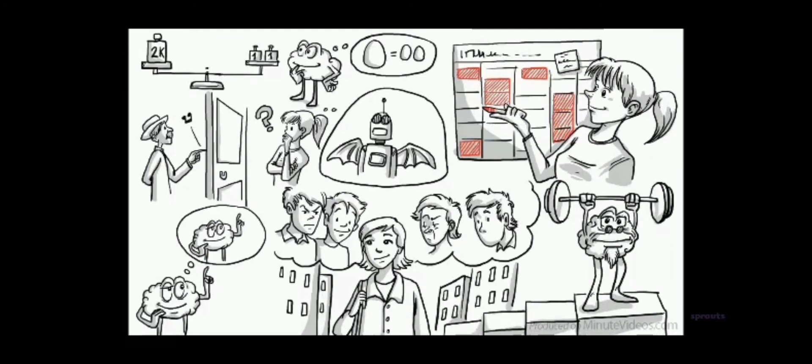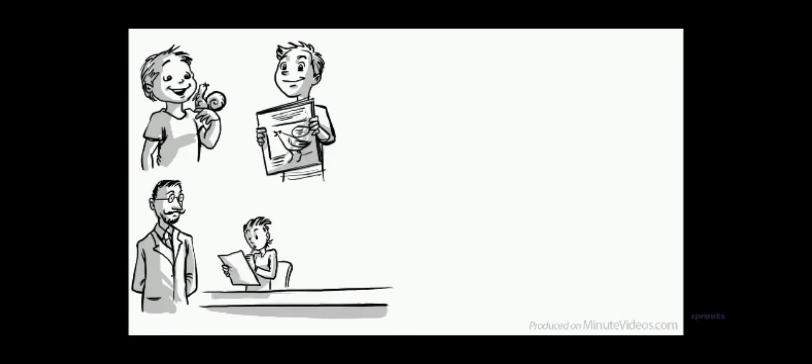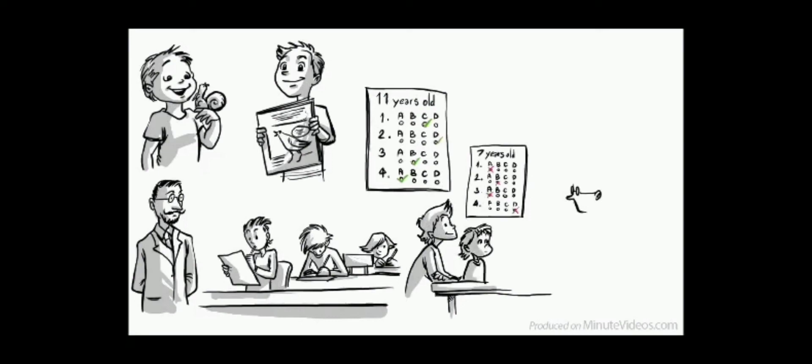Piaget's first interests were animals, and he published his first scientific paper on albino sparrows in 1907 when he was just 11 years old. In 1920, he began working with standardized intelligence tests. He realized that younger children consistently make types of mistakes that older children do not, and concluded that they must think differently. He spent the rest of his life studying the intellectual development of children.